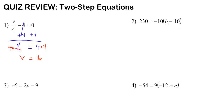Number 2: 230 equals negative 10 times (b minus 10). A negative 10 is multiplying this parentheses. Now we could distribute and solve it that way, but to do this as a two-step equation, we want to break b minus 10 out of the parentheses. Since this negative 10 is multiplying the parentheses, the way we're going to get rid of it is by dividing both sides by negative 10.